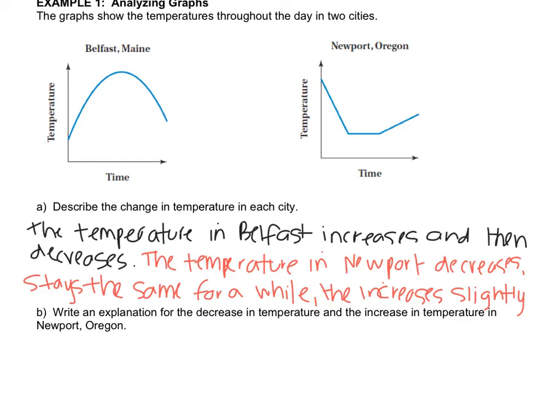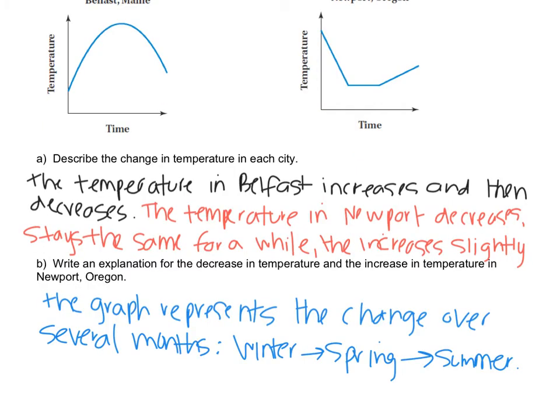Maybe as the winter time gets colder, temperature goes down. Then in the spring, the average temperature stays around the same. And then as it gets closer to summer, the temperature goes up. I wrote, the graph represents the change over several months, winter to spring to summer.